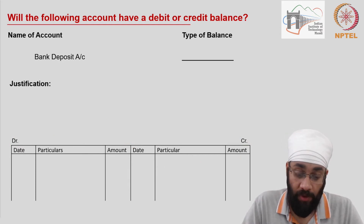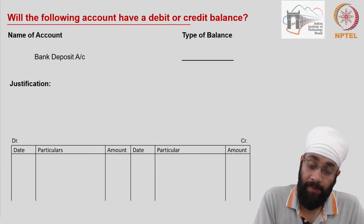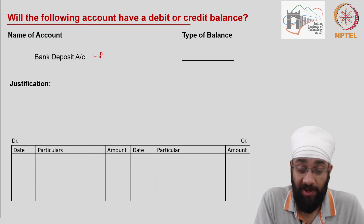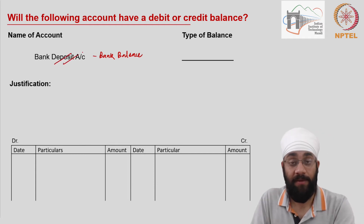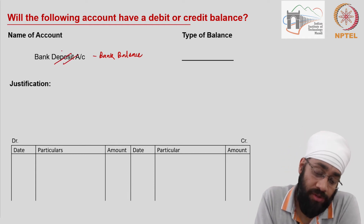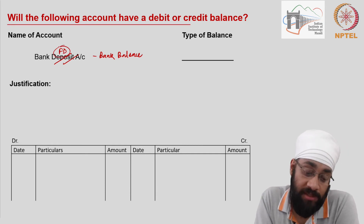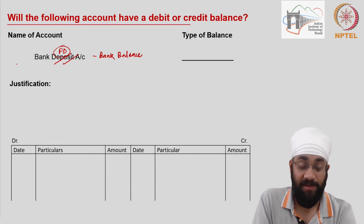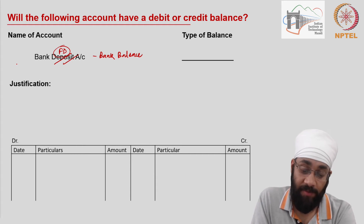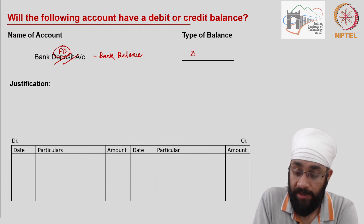Let's look at a bank deposit account. Bank deposit is essentially equal to bank balance. You could also think of it as a fixed deposit account — a fixed deposit is a term deposit and will always have a debit balance.